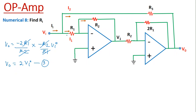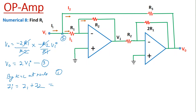Now we apply KCL at node 1. By KCL, Ii is equal to I1 plus I2. I1 from the circuit diagram: this node voltage is Vi and the inverting terminal is virtually grounded at 0 volts, so I1 equals Vi minus 0 divided by R1, which is Vi over R1. I2 is Vi minus the output voltage V0 divided by R3.